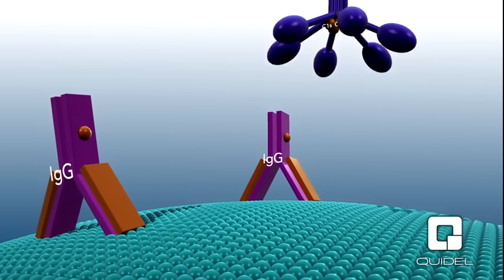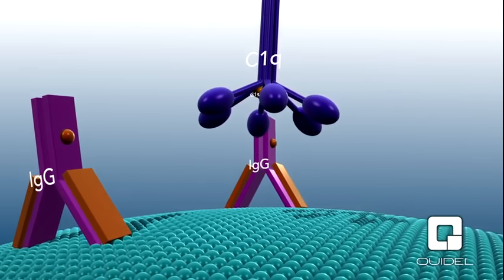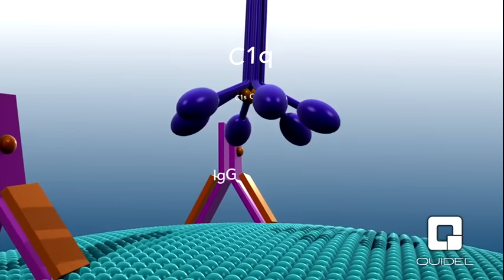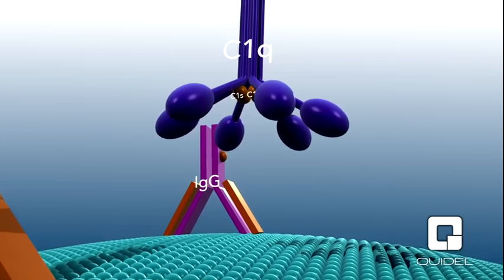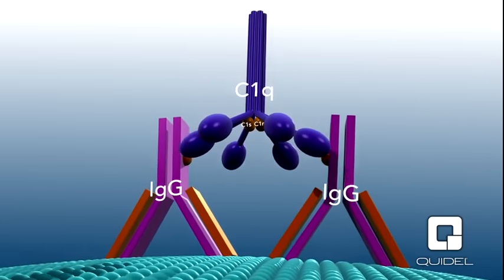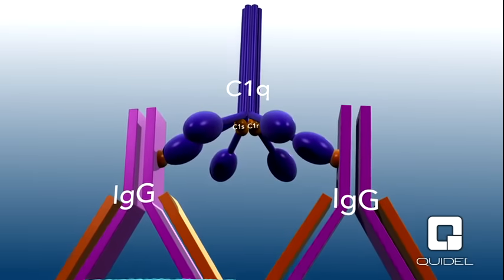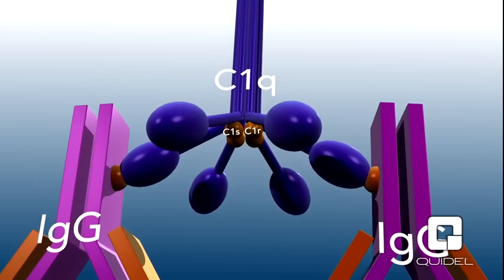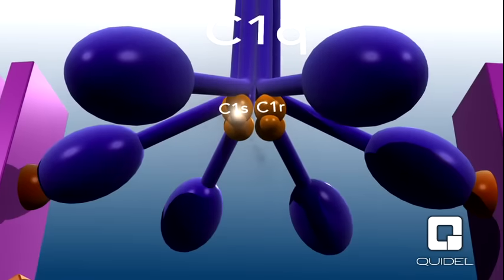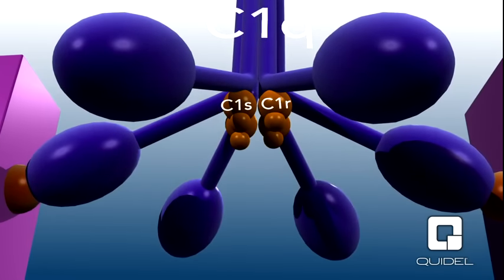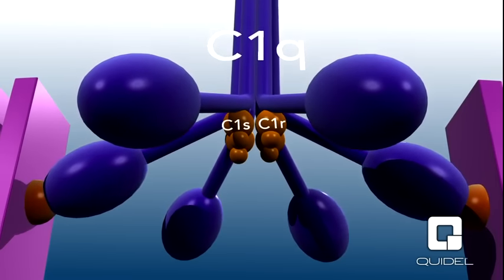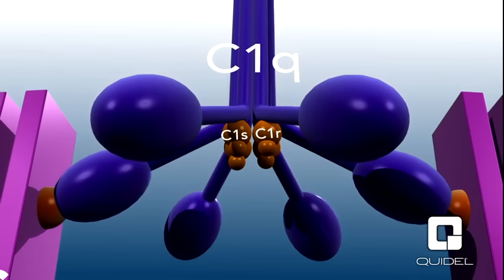The classical pathway is activated when C1, the first protein in the pathway, binds to the Fc portion of the antibody. C1 is a large macromolecule composed of a C1q molecule and two molecules each of C1r and C1s. The globular head portion of C1q binds to the Fc binding site on the antibody, causing a conformational change and subsequent autocatalytic conversion of C1r to an active serine protease. Activated C1r cleaves C1s to an active serine protease. Activation of C1 by binding antibody is also termed complement fixation.